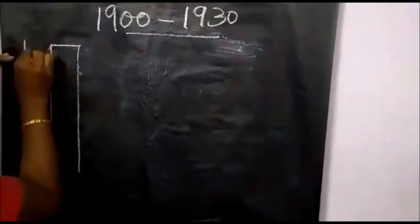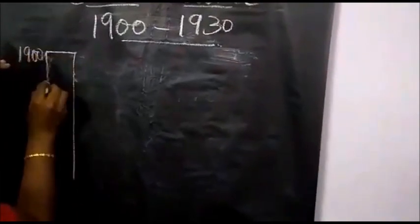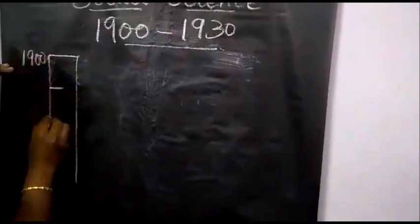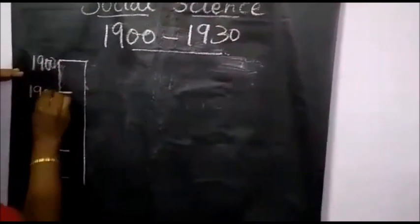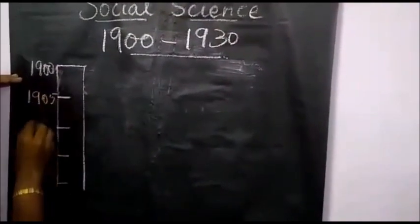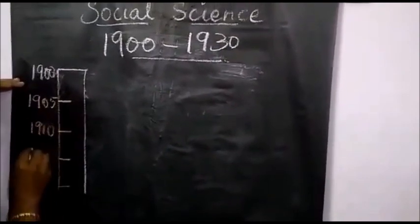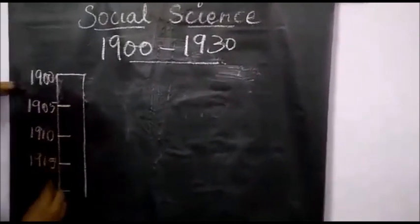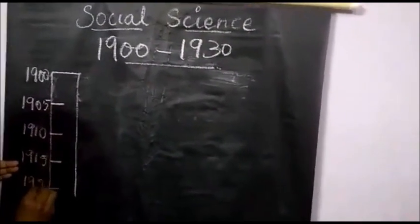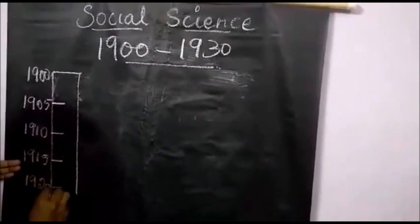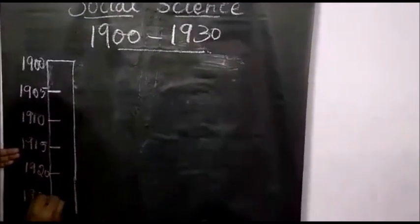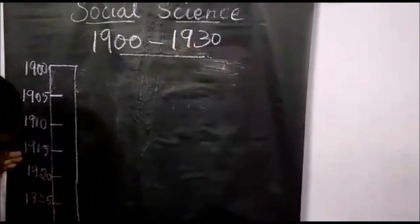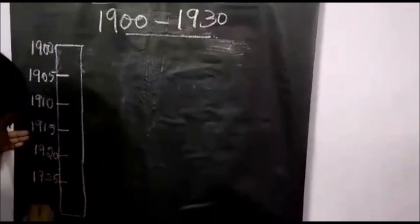Write the years here on the left side: 1905, 1910, 1915, 1920, 1925, and then the last one, 1930.